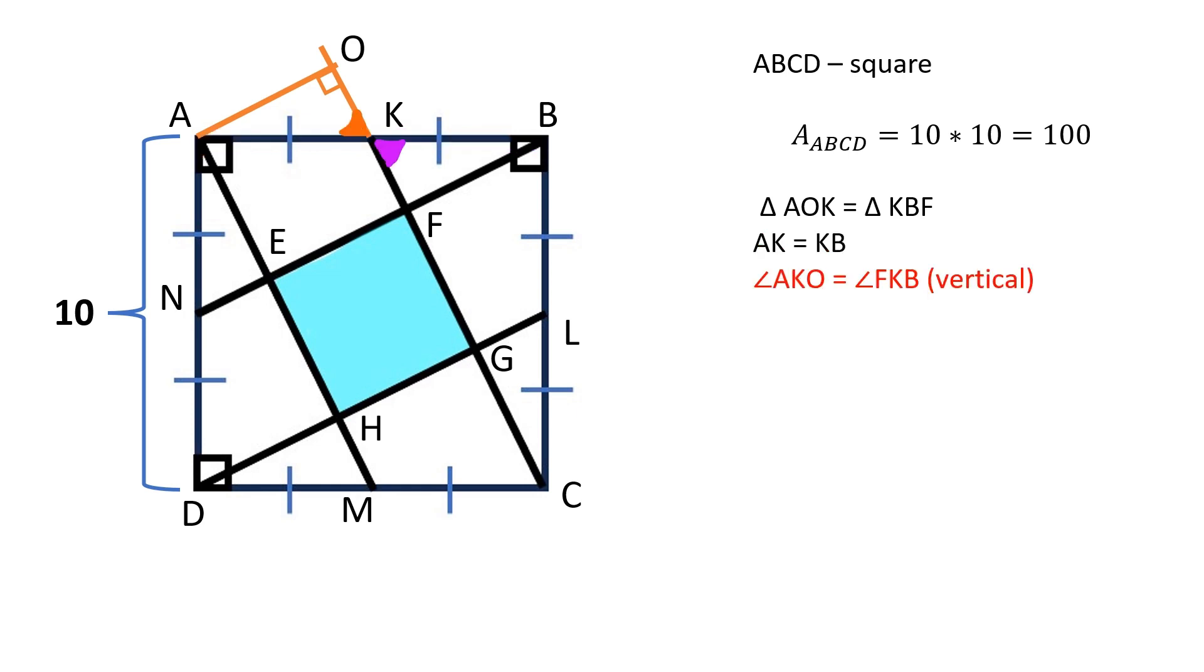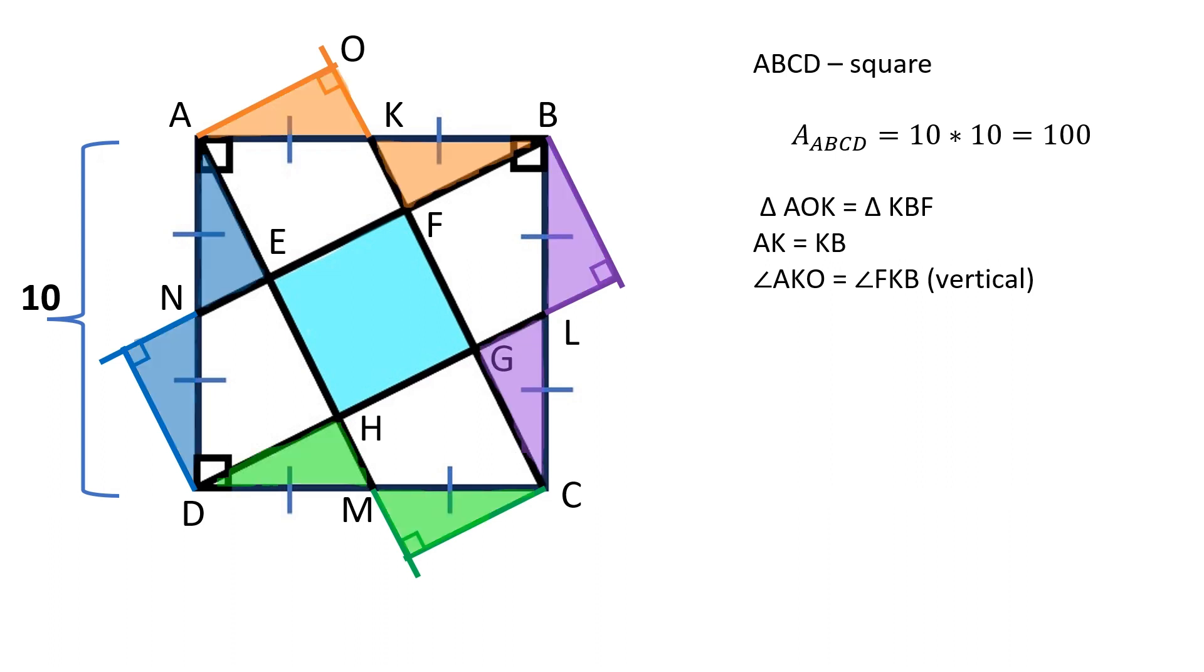Angles AKO and FKB are congruent as vertical angles. Let's repeat this procedure with each side of the square.